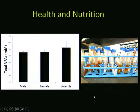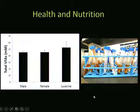Looking at short chain volatile fatty acids in fecal material, there were no differences between males, females, and juveniles in the amount of these compounds. For females this means they may not necessarily be producing more energy—there may be other benefits like folic acid production. For juveniles it's different: with smaller body size and smaller gut, they would be expected to produce fewer short chain fatty acids per gram of feces, so producing equal amounts suggests their gut microbial communities are actually producing more energy than the adults.